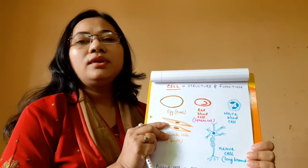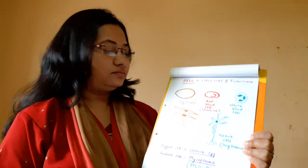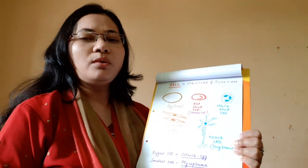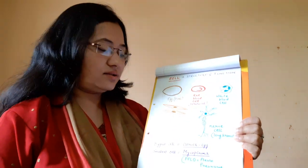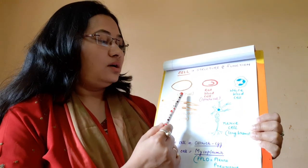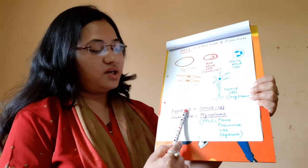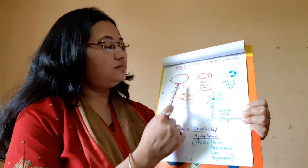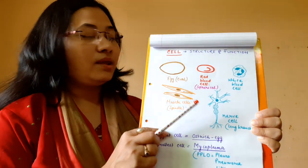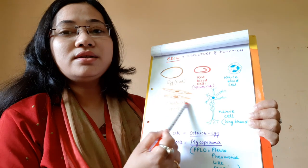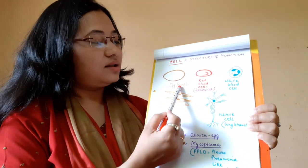Now let us see some examples of cells. Cells are usually microscopic, but a few cells can be observed with the naked eye. An egg is an example of a cell visible to the naked eye. The biggest cell is the ostrich egg. Other examples include red blood cells (RBC), white blood cells, and muscle cells.